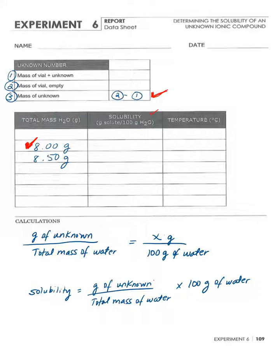This is what you have in number three, divided by your total mass of water, times 100. So if you're using 8 grams of water, the grams of your unknown—it's always the same number—times 100. Then you move to the second one.